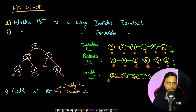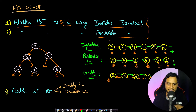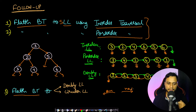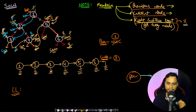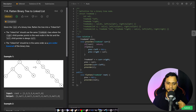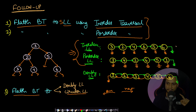Now for possible follow-up problems: you can be asked to flatten a binary tree to a linked list using in-order or post-order traversal, or the traversal order may not be mentioned and you have to figure it out from the example. You can also be asked to flatten to a doubly linked list (left pointer as previous, right pointer as next), or to make a circular single or circular doubly linked list. These can be combined with any traversal order — in-order, pre-order, or post-order.